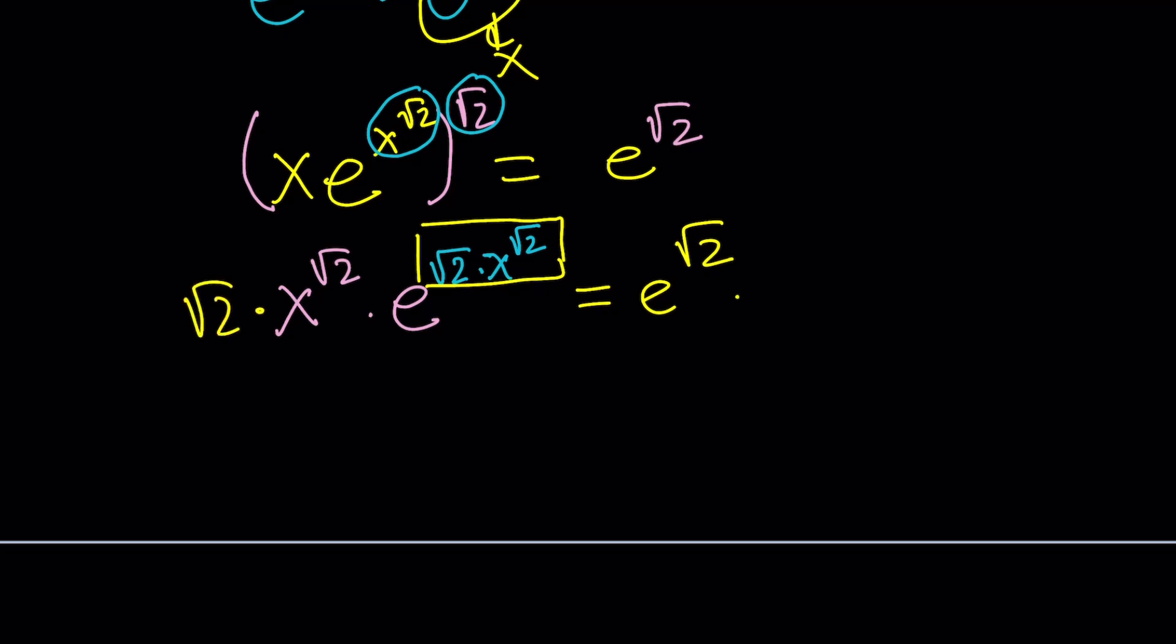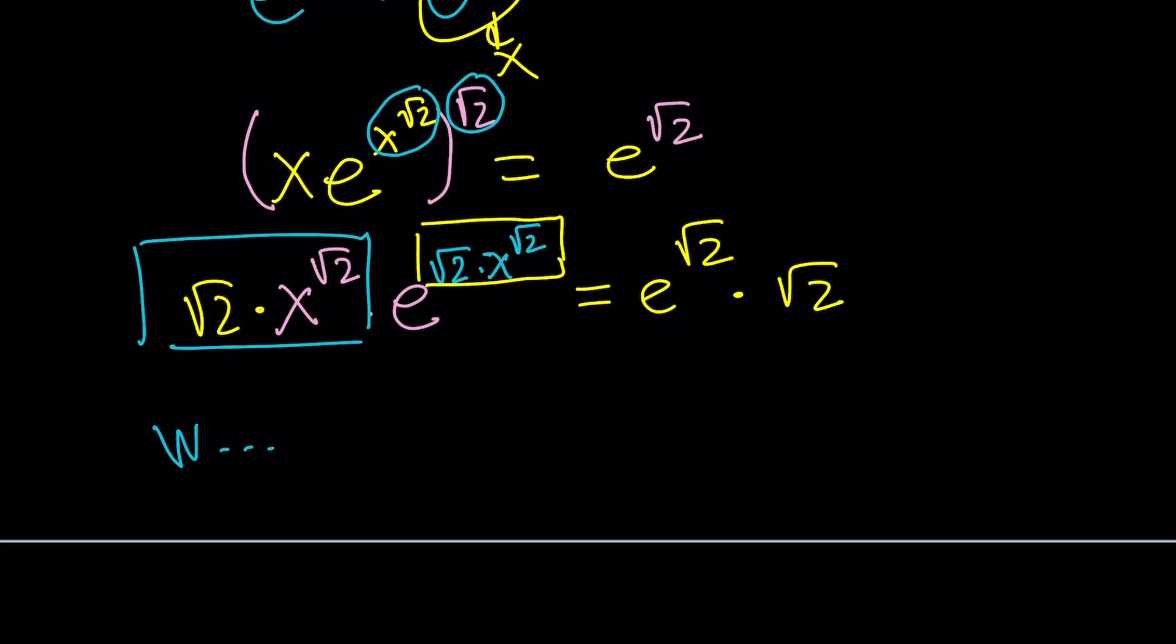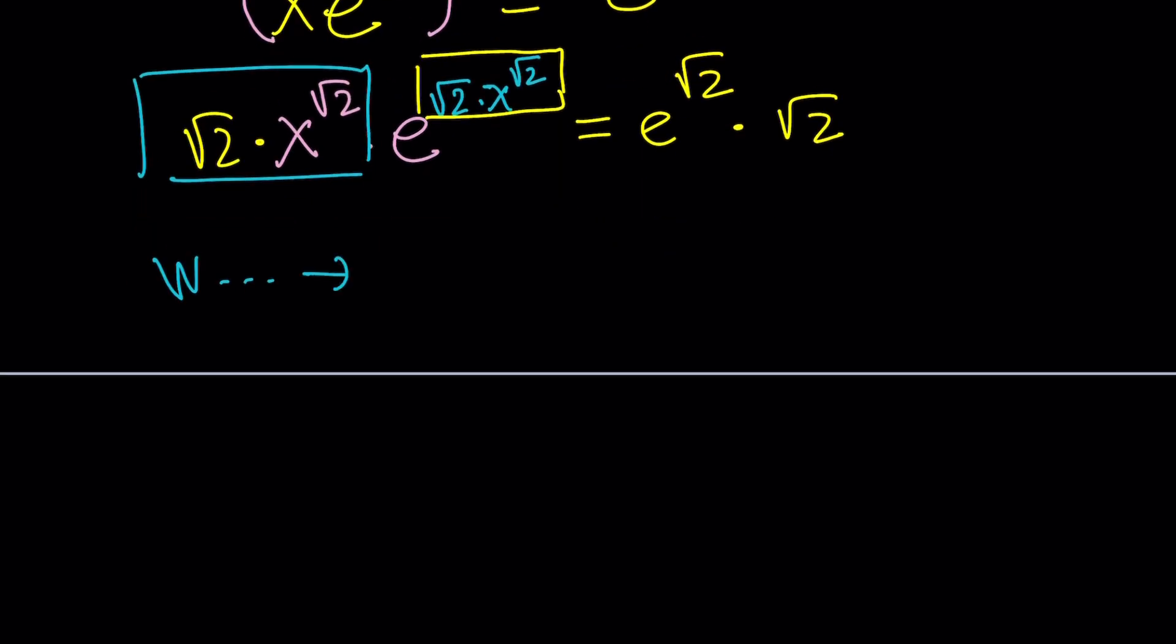This is our thingy, or t. Or, of course, if you apply Lambert's w function on both sides, you're going to get, from here, if you apply Lambert's w, this is going to give you root 2 x to the root 2. And, the right-hand side, notice that this is my t. And, if you apply Lambert on it, it's going to give you root 2. Which means, x to the power root 2 equals 1. Which means, x equals 1. Let's go ahead and take a look at the graph.